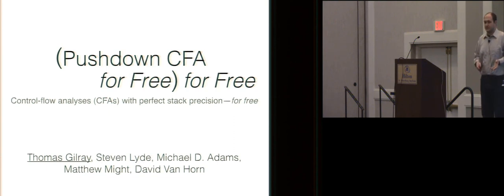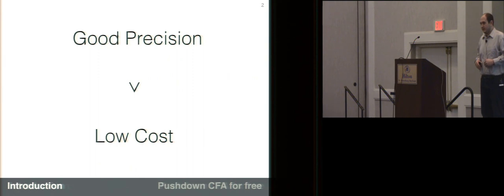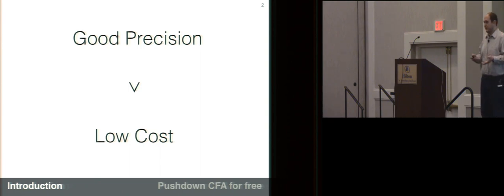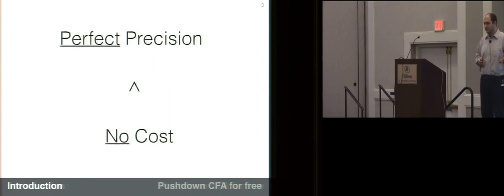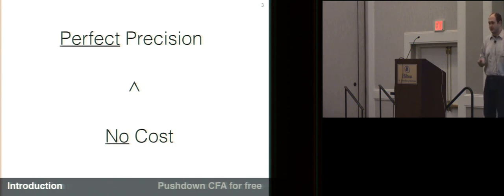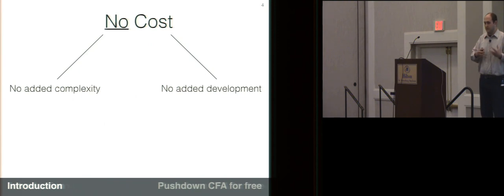A central challenge in static analysis is that we normally have to compromise between either getting good precision or getting a low cost of analysis. Getting both is hard, and getting a guarantee for both is even harder. But the technique we present is one of the rarer cases where we can get the best of both worlds — a certain form of perfect precision at no additional cost in two different senses: computational complexity and development.